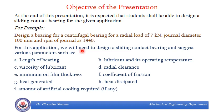We need to find: what will be the length of bearing, what lubricant is going to be used and what will be its operating temperature, what would be the viscosity of the lubricant, what radial clearance is required, what would be the minimum oil film thickness, what would be friction coefficient, how much heat will be generated, how much heat will be dissipated, and if any artificial cooling is required — that means if Hg is not equal to Hd — then what amount of heat needs to be dissipated artificially.